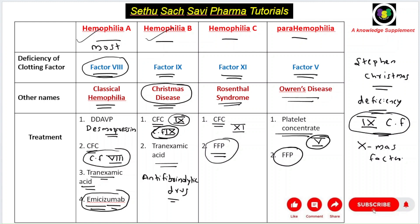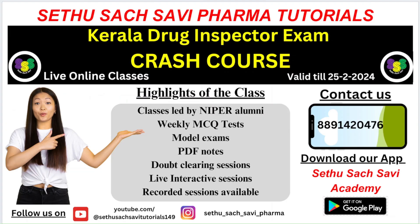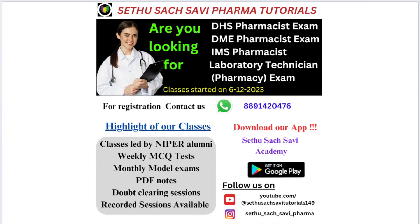Coming back to our question: which of the following is known as Christmas disease? The answer is Christmas disease is Hemophilia B, due to the deficiency of clotting factor 9. The correct answer is choice B. Hope you understood this discussion session — keep watching, thank you so much!